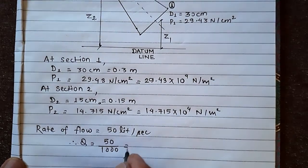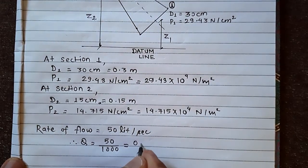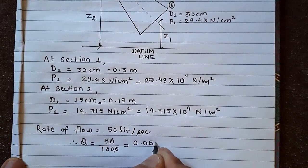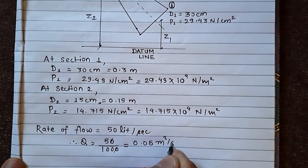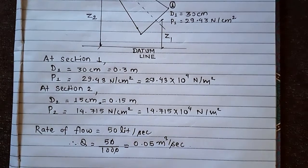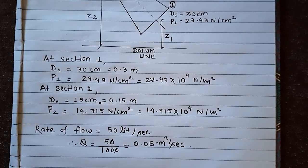This is 0.05 meter cube per second. Q is 0.05 meter cube per second.